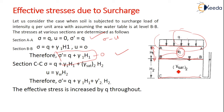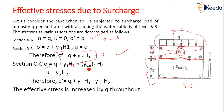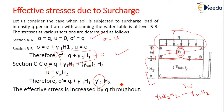At section CC: sigma = q + gamma1·h1 + gamma_sat2·h2. The pore water pressure above BB is zero, but below BB the water table exists so u = gamma_w·h2. Therefore sigma' = q + gamma1·h1 + gamma_sat2·h2 − gamma_w·h2. Since gamma_sat − gamma_w = gamma', this becomes sigma' = q + gamma1·h1 + gamma'2·h2.